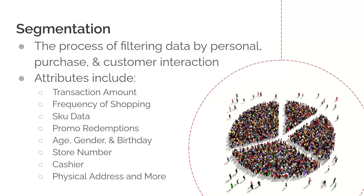Segmentation allows retailers to filter customers based on their profile, purchase, or interaction attributes — customers that live in a certain zip code, shop at a certain location, purchase specific products, or have even clicked through email campaigns. Any information that's being brought into the point-of-sale system can be mapped and used for segmentation purposes in OpCulture.